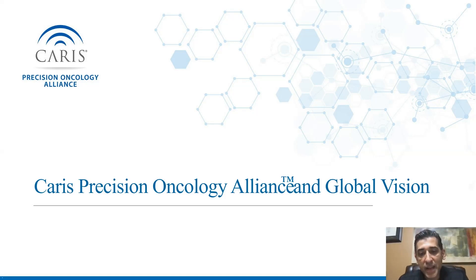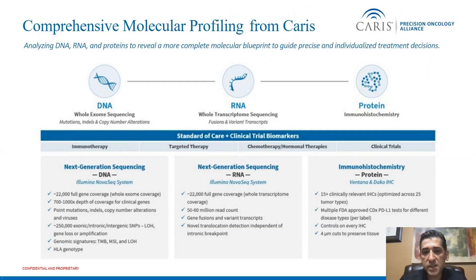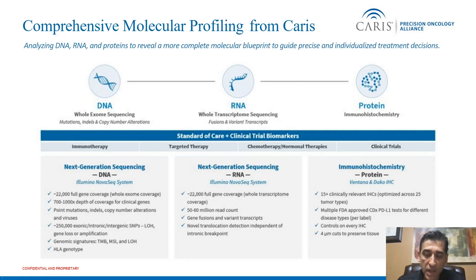I'm going to talk today about large research networks and how this can help the development and evolution of clinical research in the world of precision oncology. I'm going to use the Karis Precision Oncology Alliance platform as a conduit to explain that. It is important to start by recognizing the importance of providing broad molecular profiling and sequencing for patients who are diagnosed with cancer.